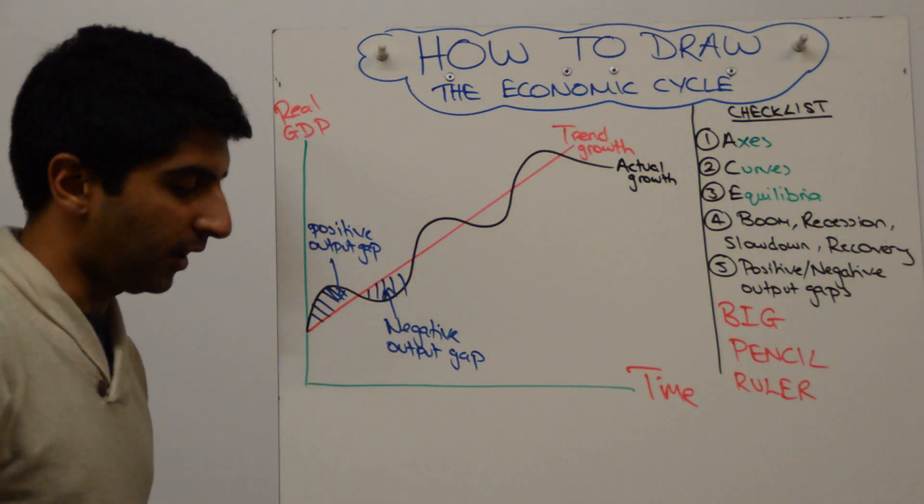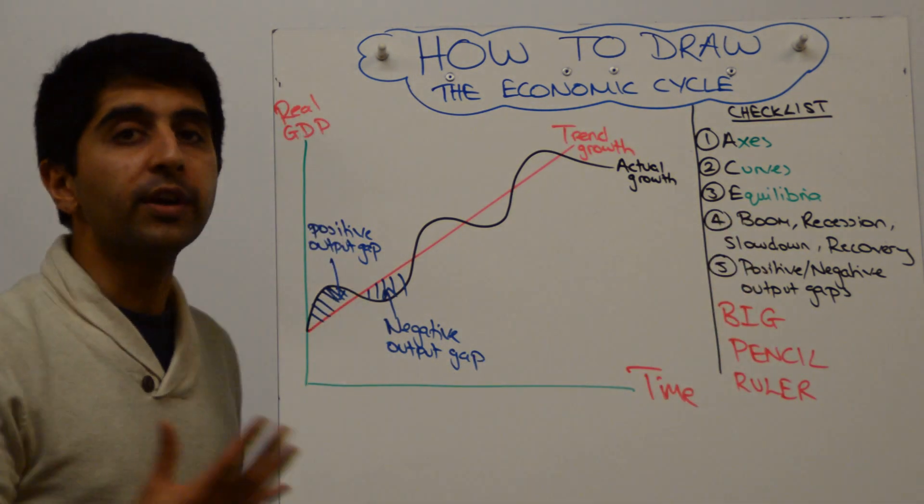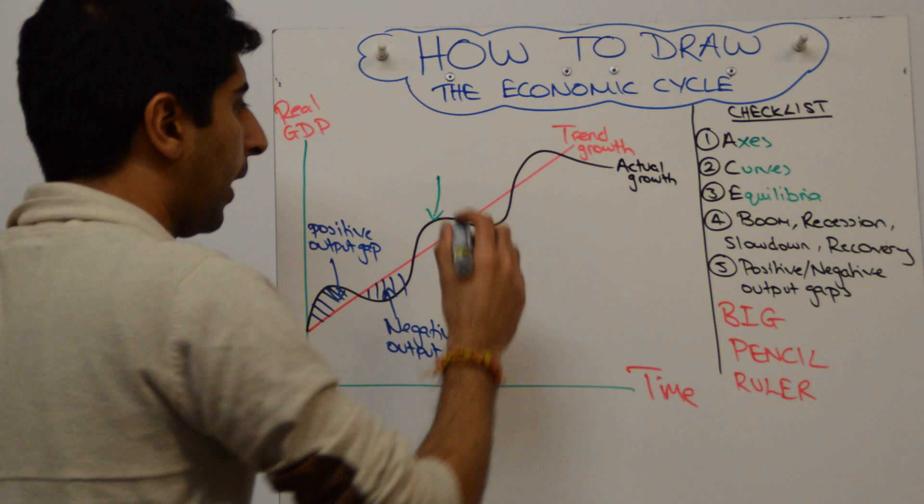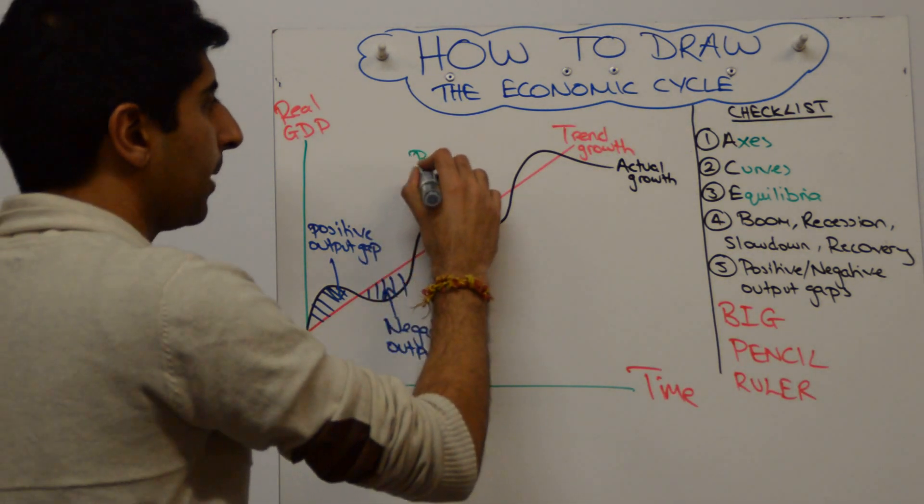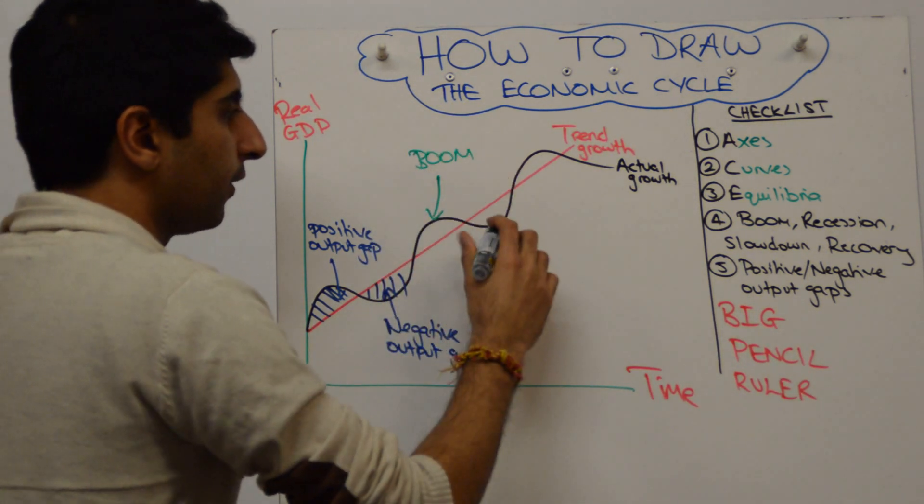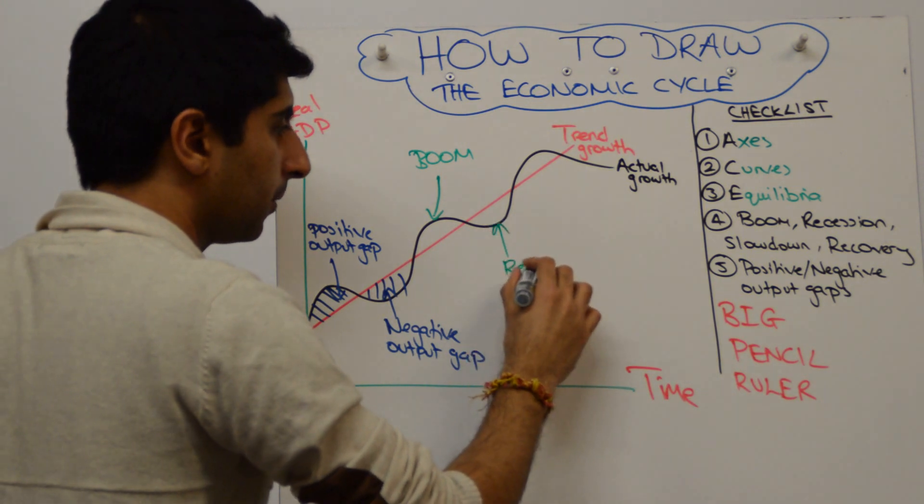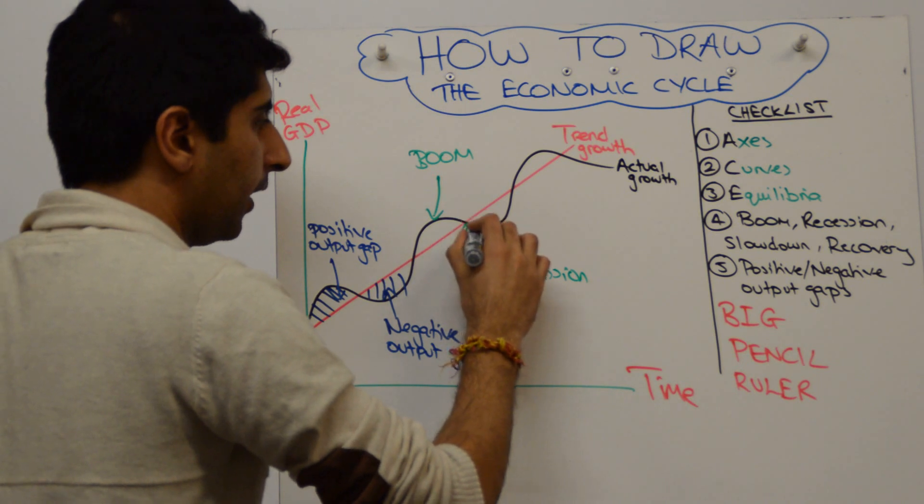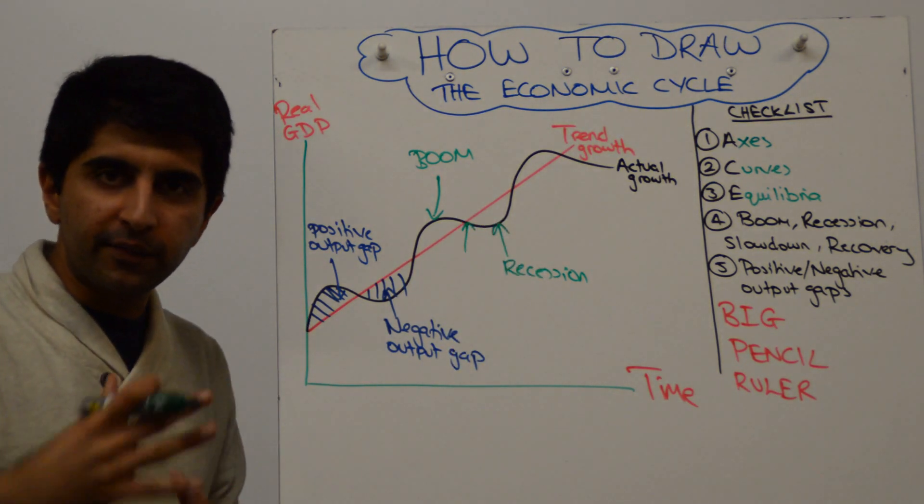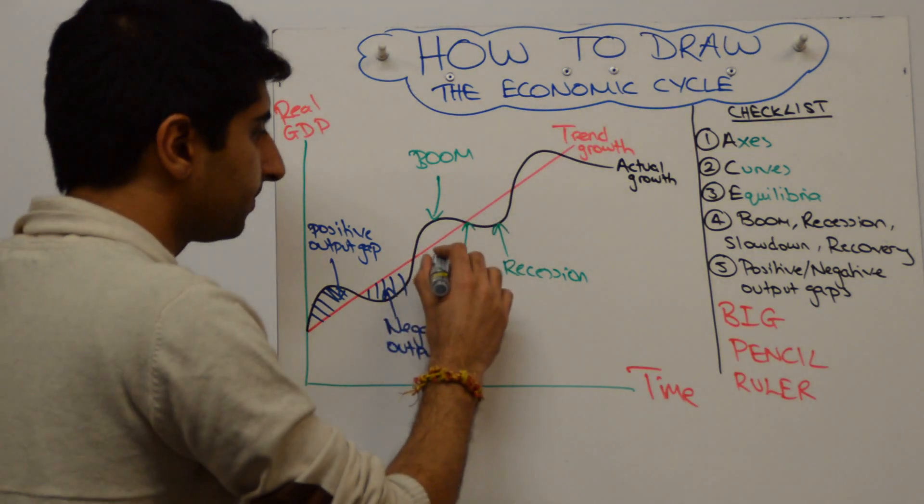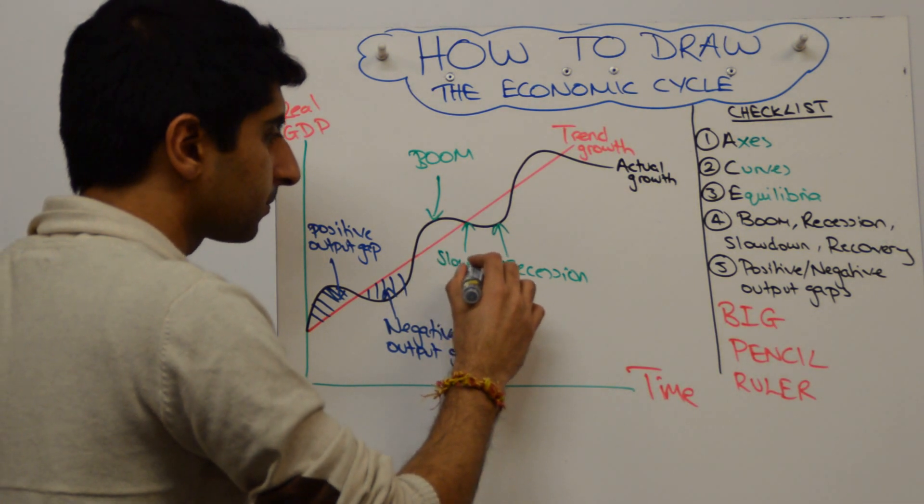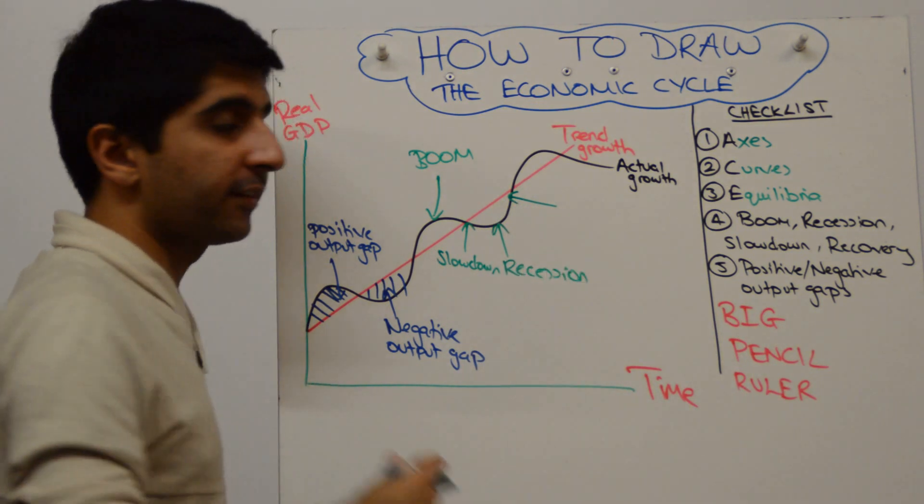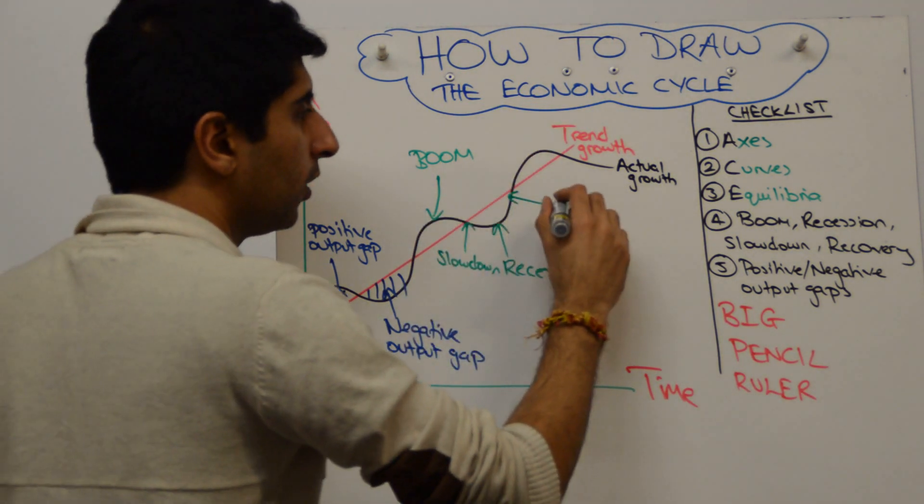And I'm going to finish this diagram by labeling the four key stages of the economic cycle. So boom is where actual growth reaches a peak. Recession is when we hit a trough. Slowdown is when the economy is kind of teetering towards a recession. And recovery is when the economy is coming out of recession and moving towards a boom.